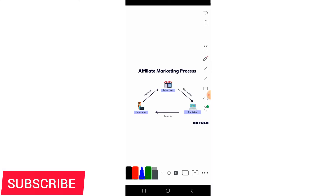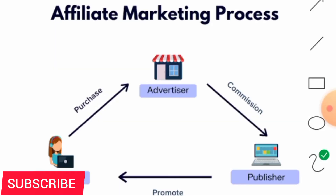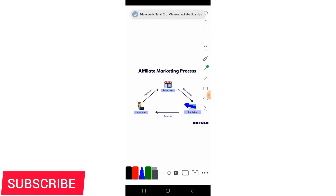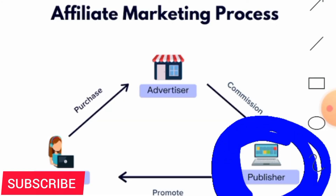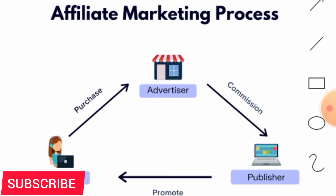There are three parties involved: the advertiser, the publisher, and the consumer. The advertiser is the owner of the product or the vendor — for example, Jumia, which hosts other people's products. You, the publisher, go to the advertiser and ask to promote their products. They will give you a specific, clickable link that takes customers to the advertiser's site — that is your affiliate link.